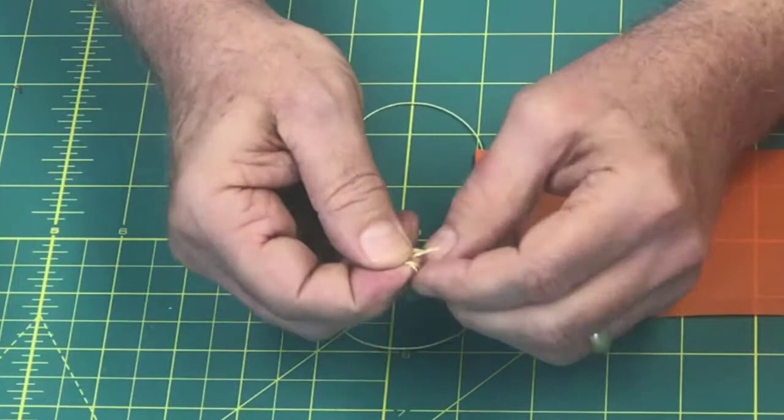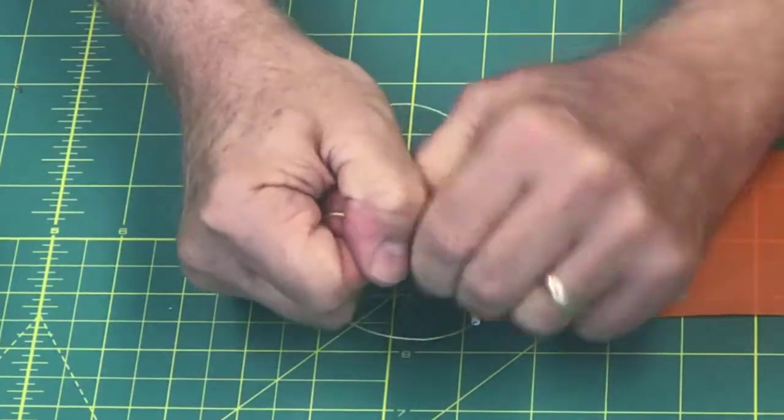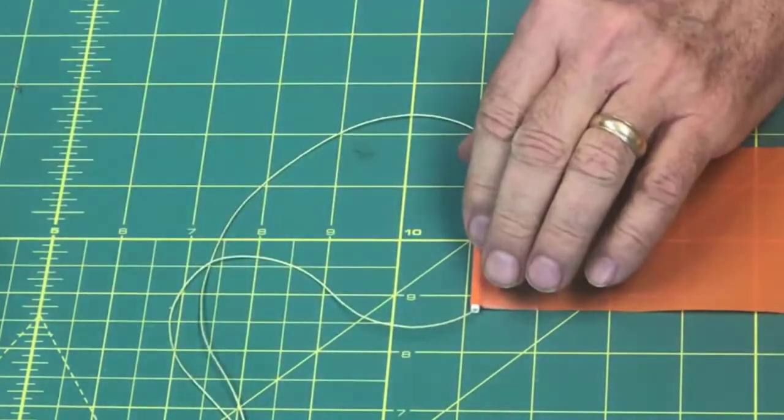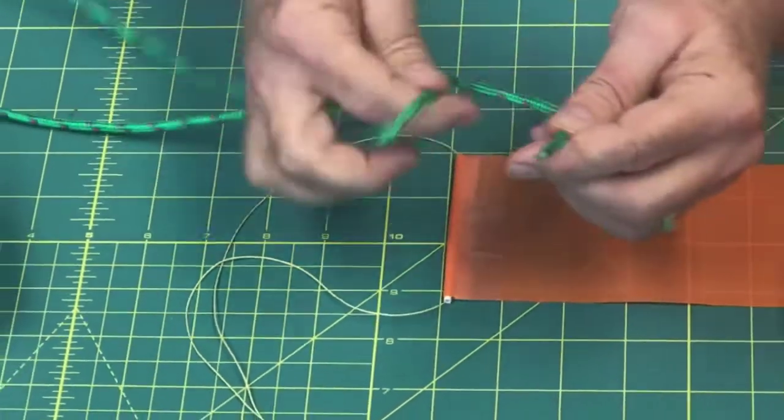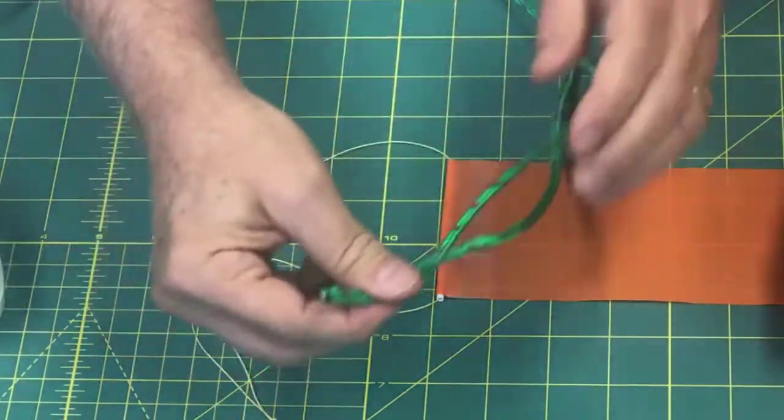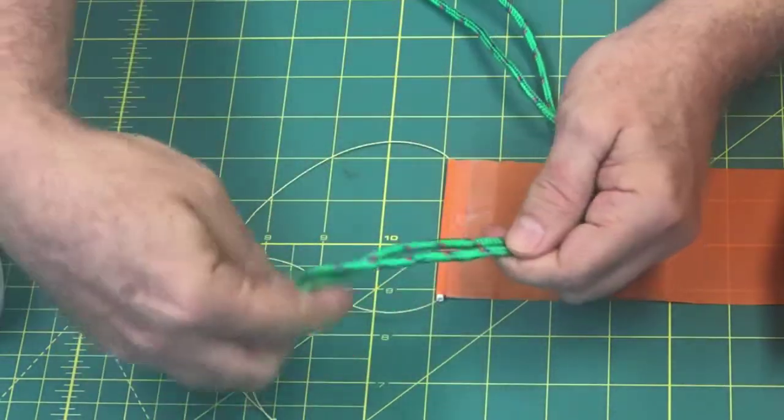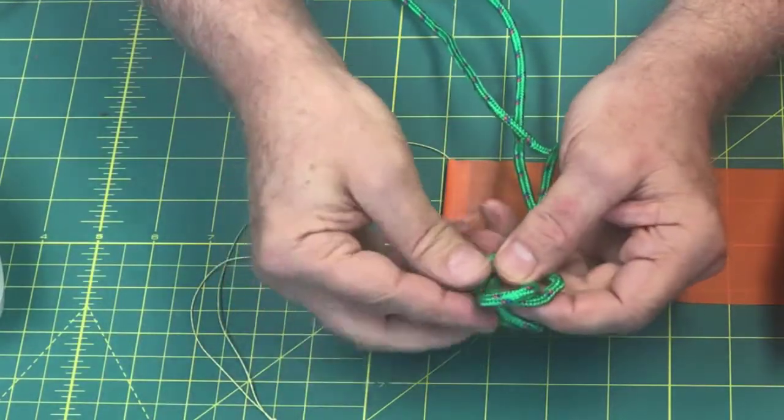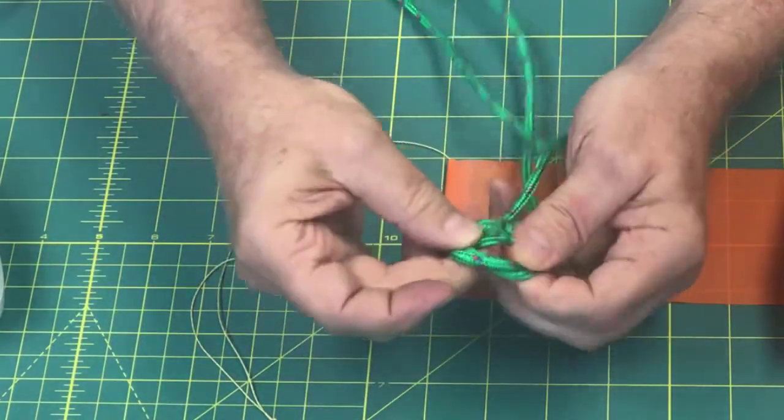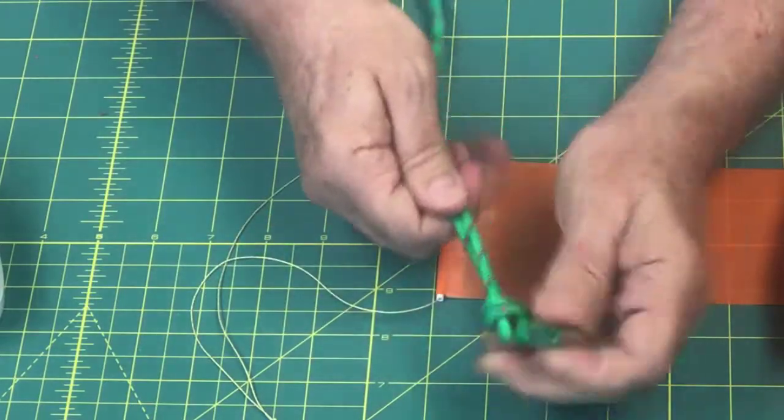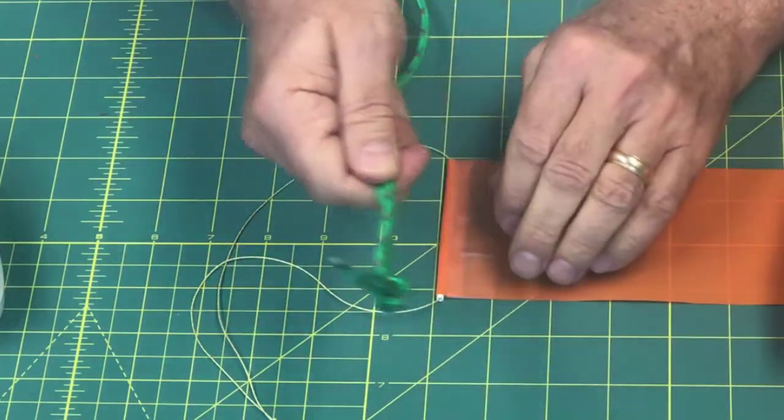I know it's really hard to see on that, so let me show you on this bigger piece. All you're doing is taking your two ends together, you take them over, make a loop, come up underneath the loop, and then pull them tight. That's just a simple overhand knot.